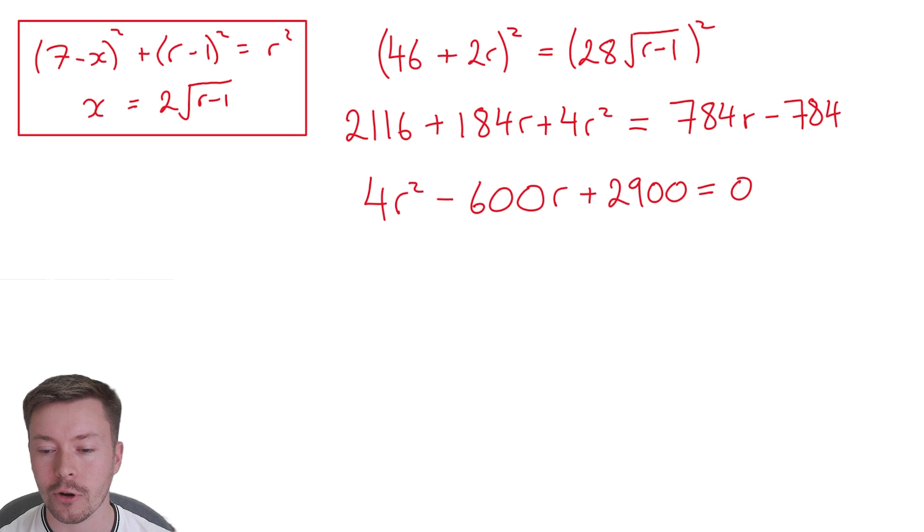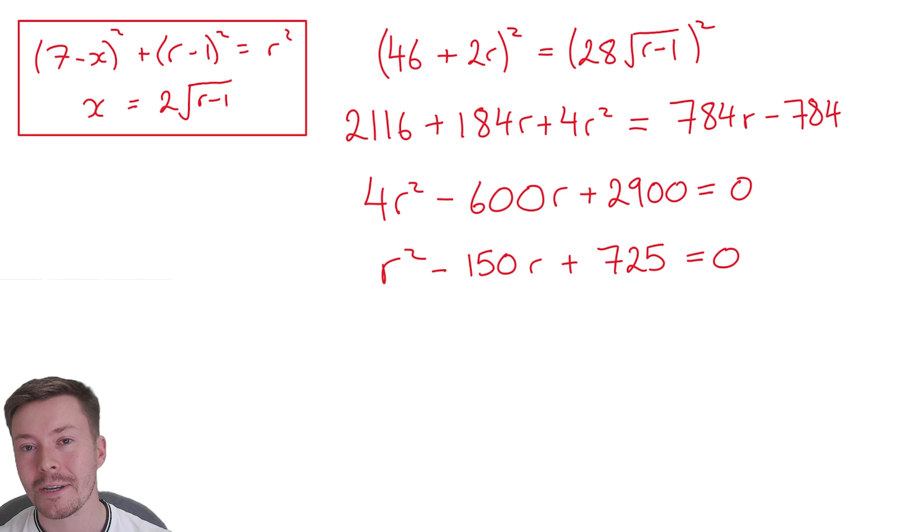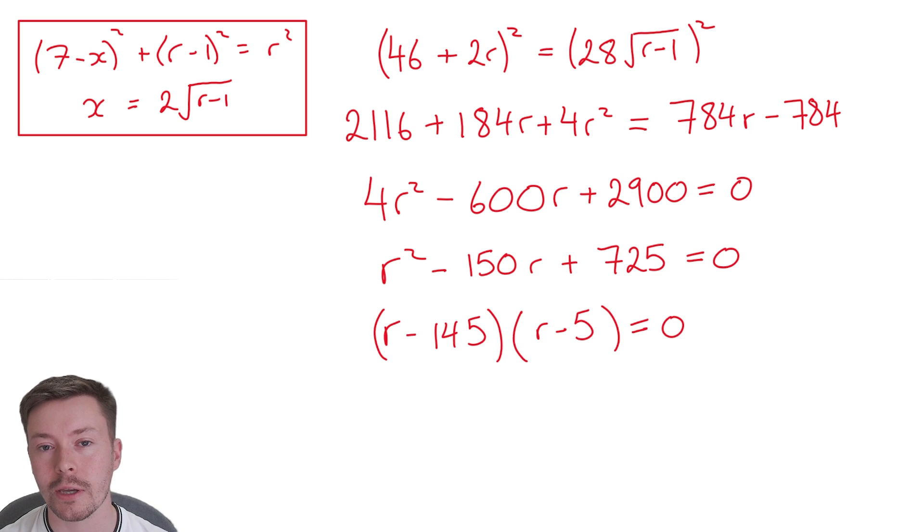I'm going to put the 4r squared at the front just so it's got the usual layout. I'm then going to divide it all by 4 and I'm going to get r squared minus 150r plus 725 equals 0. I'm then going to factorize it, or you can use quadratic formula or your calculator to solve this. But factorizing it gives you this. And that means that the solutions are 145 or 5.